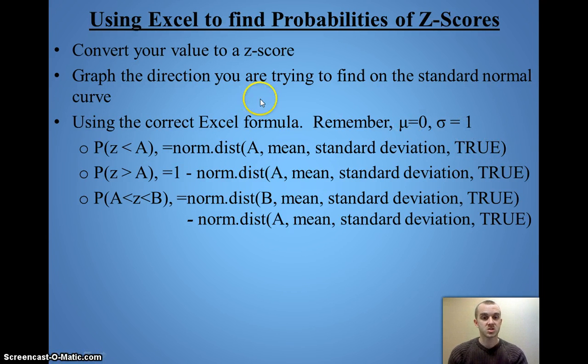For less-than, it's just that formula. For greater-than, it's one minus that formula. And if it's in between, it's the formula for the larger value minus the formula for the smaller value.